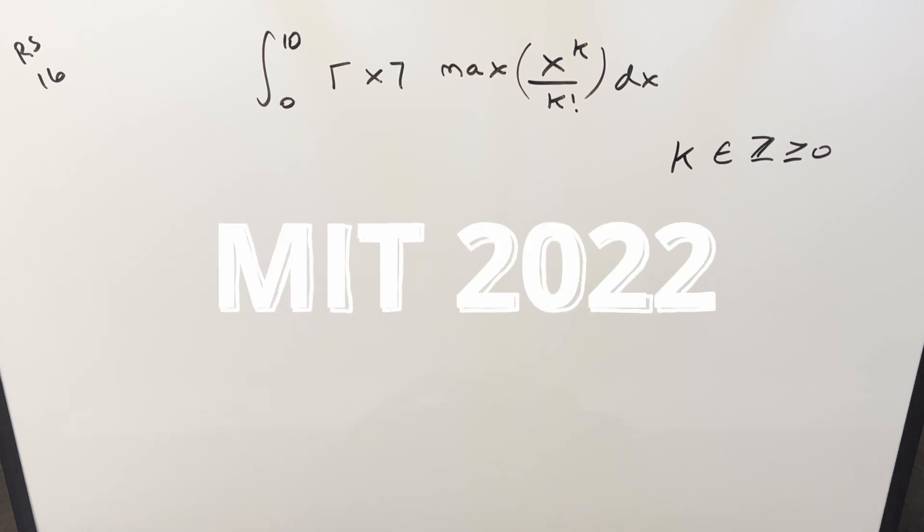Okay, we have another integral here today from the MIT Integration Bee 2022 regular season number 16. We have the integral from 0 to 10 of the ceiling function times the max of x to the k over k factorial dx.